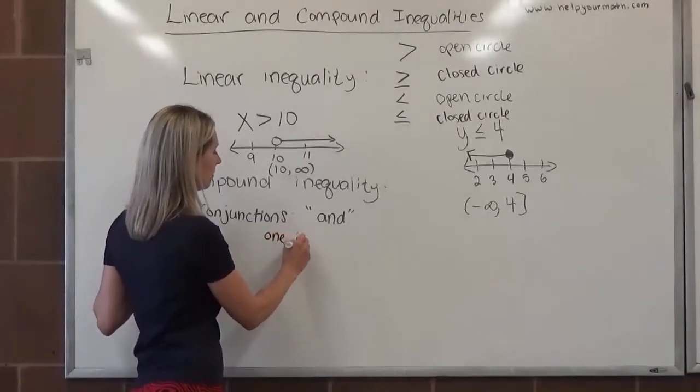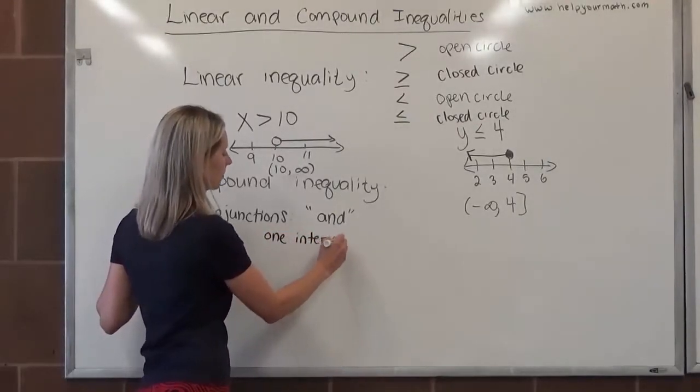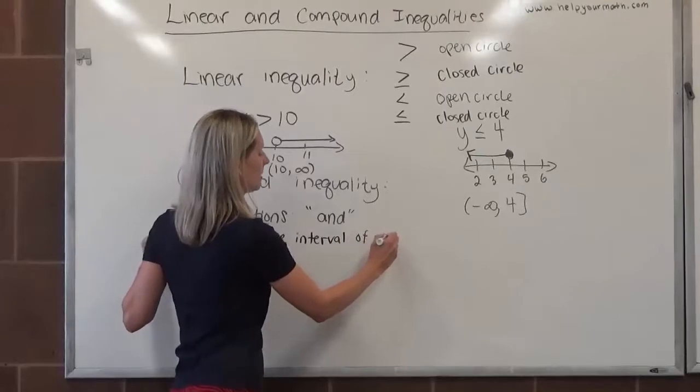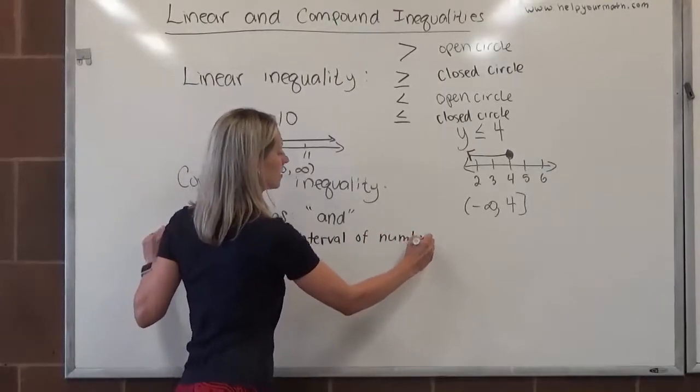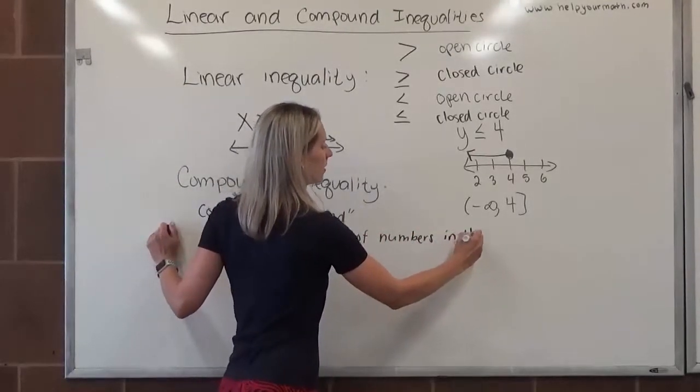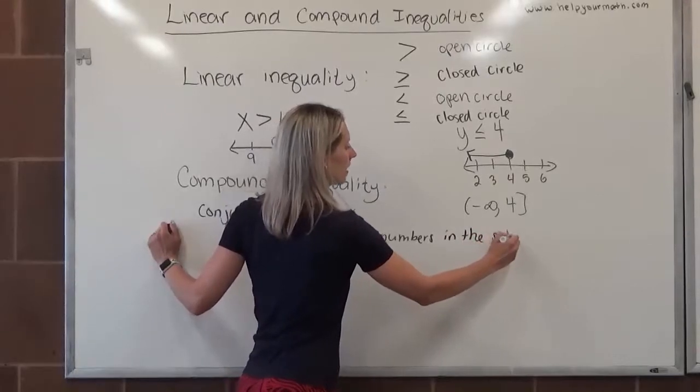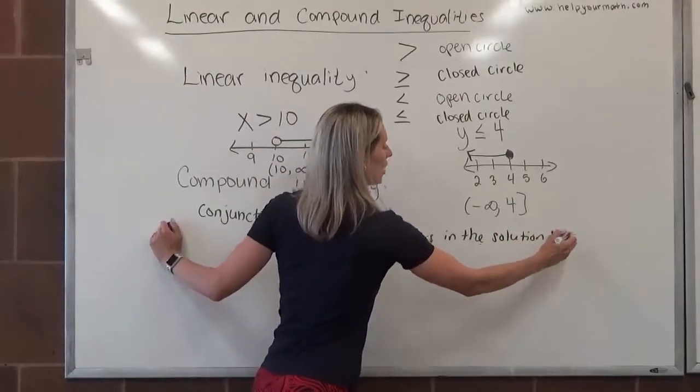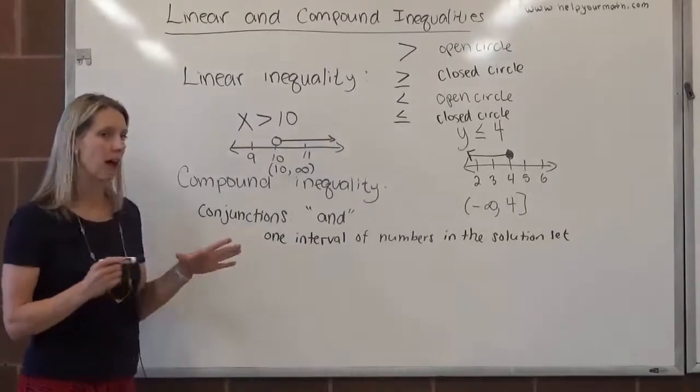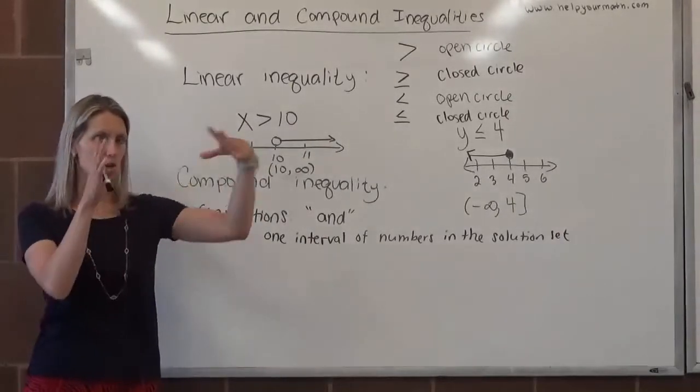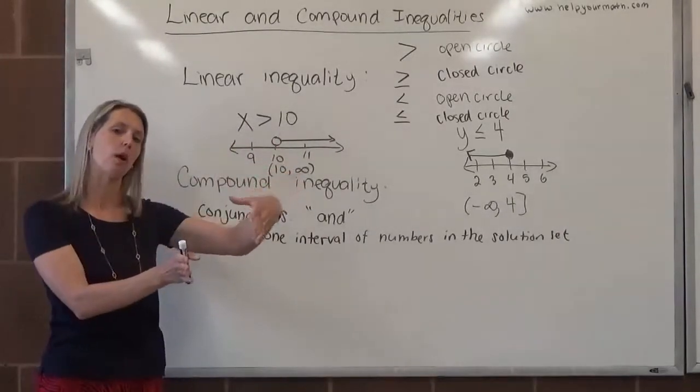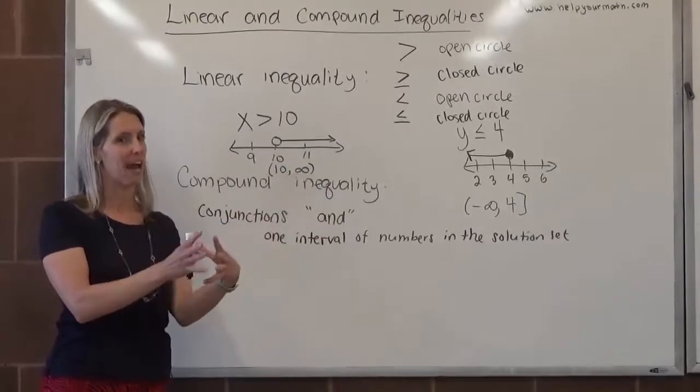With conjunctions, we have one interval of numbers in the solution set. Generally, if we're dealing with a conjunction, we are not going to use infinity signs because it should be contained. There should be a smallest point and a largest point. We're just looking at everything in between.